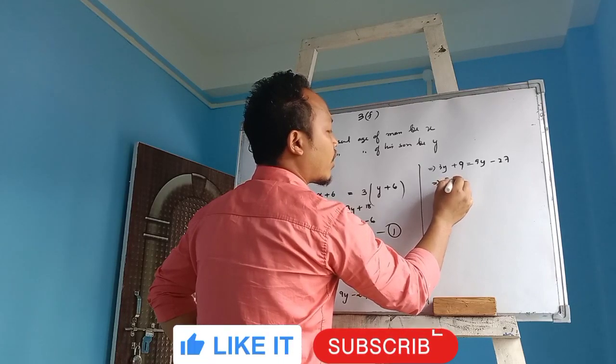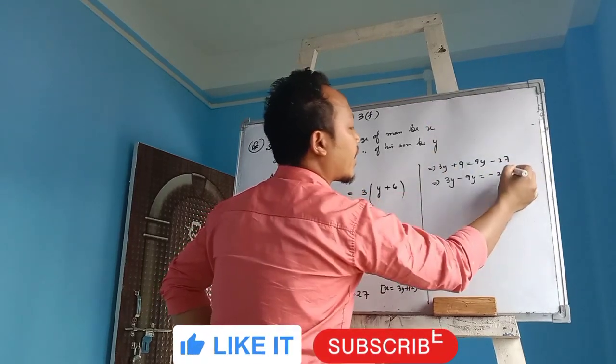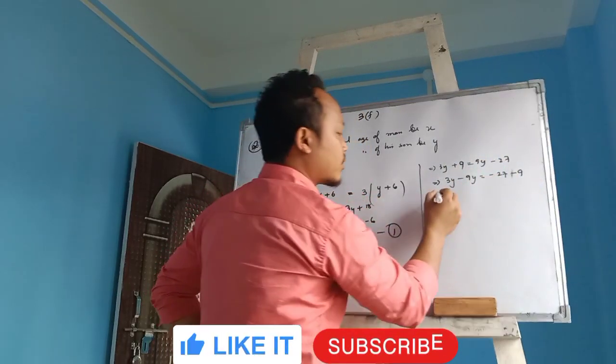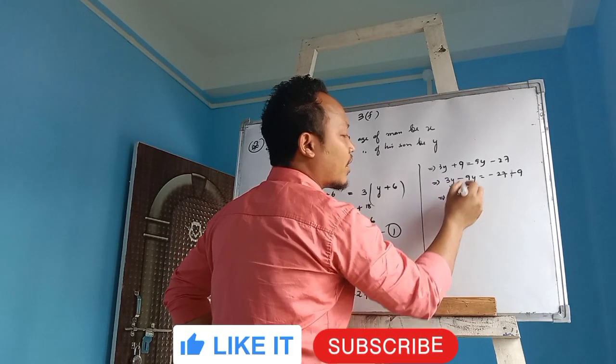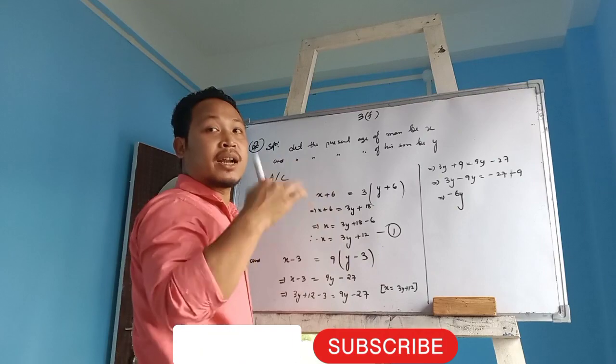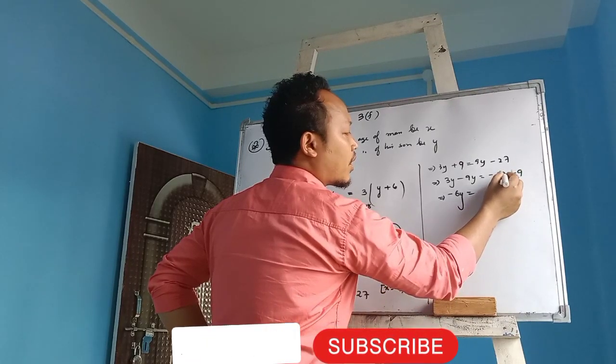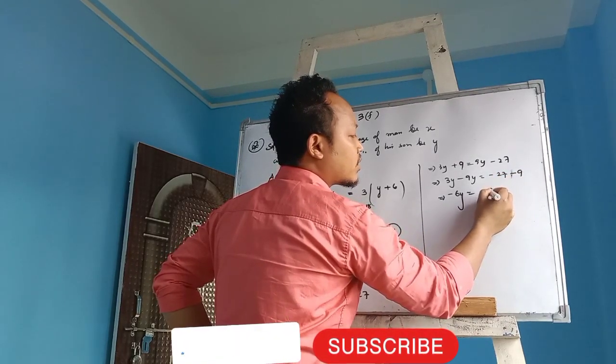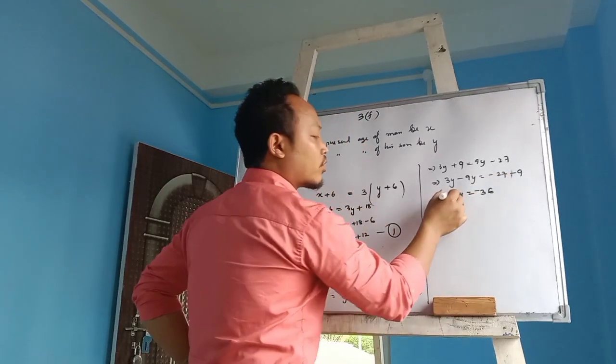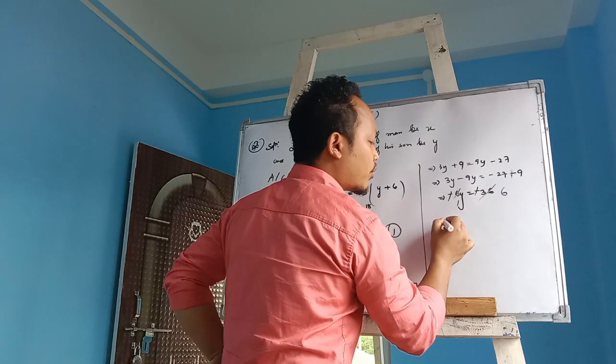So rearranging, 3y minus 9y equals minus 27. This will go to this side. Minus 9, because of plus it will change into minus. So 3y minus 9y is 6y but with minus sign. Why minus? Because 9 is greater than 3, yes or no? So here minus minus is plus. So we have minus 6y equals minus 36. Therefore y equals 6.